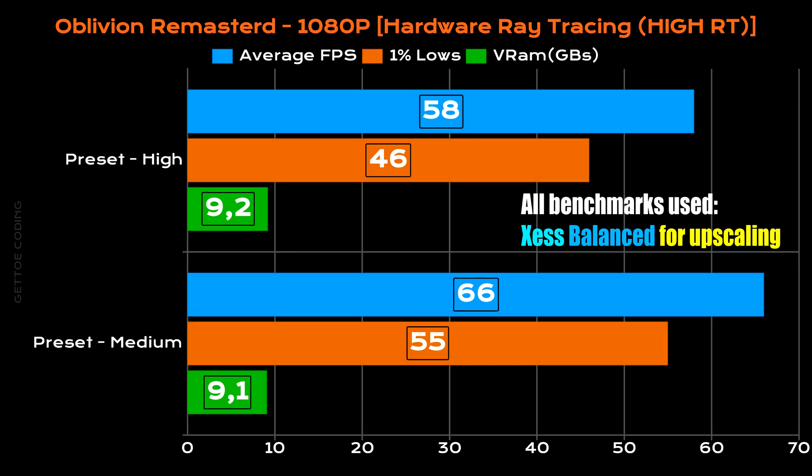Dropping down to 1080p with hardware ray tracing enabled at the high ray tracing preset: for the high graphical preset, an average FPS of 58 was obtained, with 1% lows at 46 and VRAM usage around 9.2 gigs. For the medium graphical preset, average FPS was 66 and 1% lows came in at 55, with VRAM usage sitting at around 9.1 gigs.